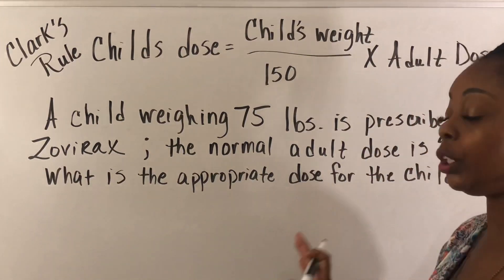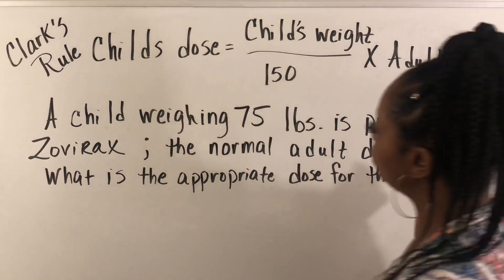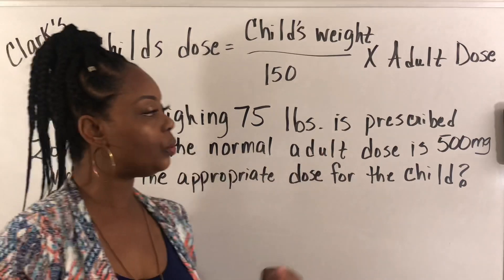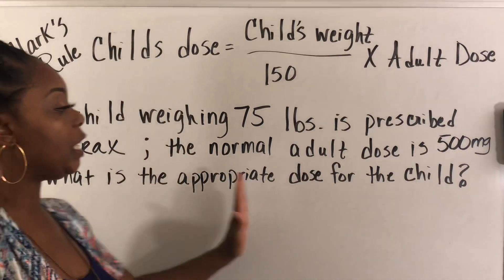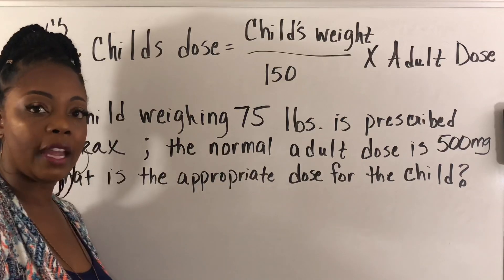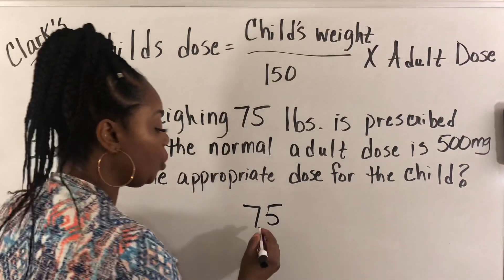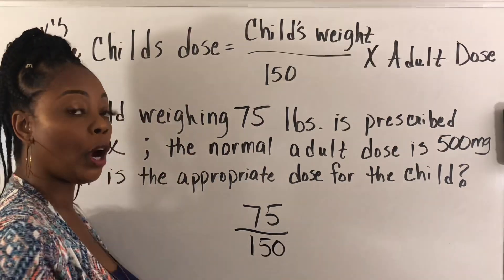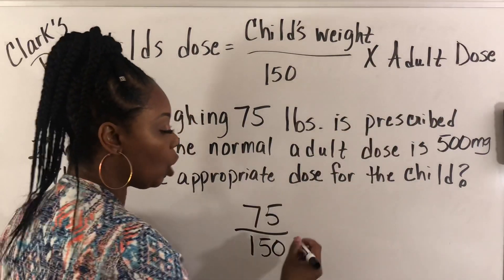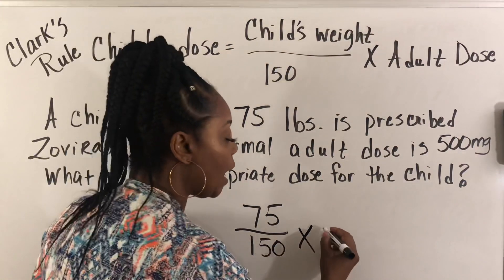Still on Clark's Rule, same formula. Now we have a child weighing 75 pounds. The normal adult dose is 500 milligrams. What is the appropriate dose for the child? The child weighs 75 pounds, divide by 150 — that is standard and permanent for Clark's Rule — then multiply times the adult dose of 500 milligrams.